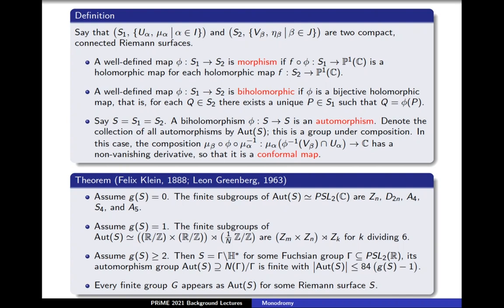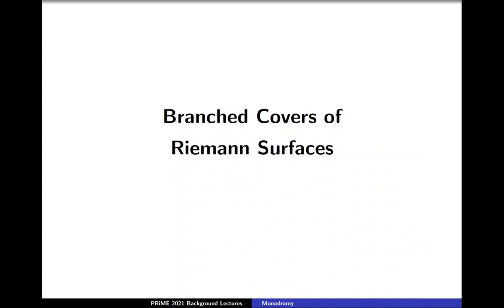Next, assume that the genus of S is greater than or equal to 2. Then S is of the form H*/Gamma for some Fuchsian group Gamma in PSL2(R). Its automorphism group Aut(S) contains the normalizer of Gamma mod Gamma and is finite, with |Aut(S)| ≤ 84·(g(S) − 1). Finally, every finite group G appears as the automorphism group of S for some Riemann surface S.